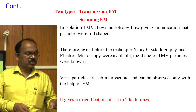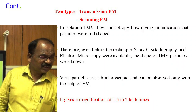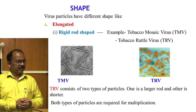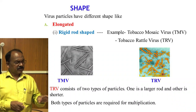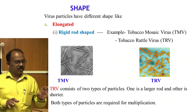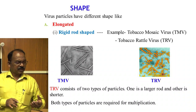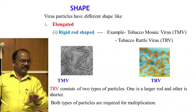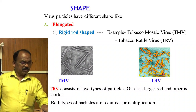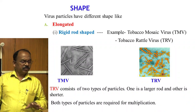Virus particles have different shapes. The elongated type includes: rigid rod-shaped, flexuous rod-shaped, and bacilliform or bullet-shaped. Under rigid rod-shaped particles, examples include Tobacco Mosaic Virus and Tobacco Rattle Virus. Tobacco Rattle Virus consists of two types — a larger rod and a shorter rod — and both types of particles are required for multiplication. Flexuous rod-shaped examples include Citrus Tristeza Virus, Sugarcane Yellow Virus, Potato Virus X, and Potato Virus Y.